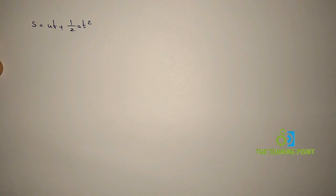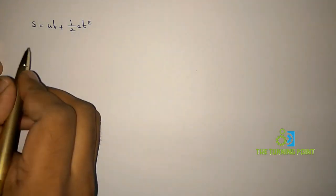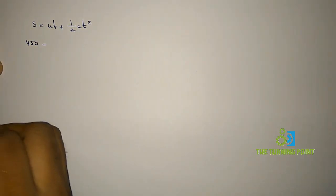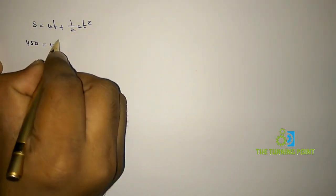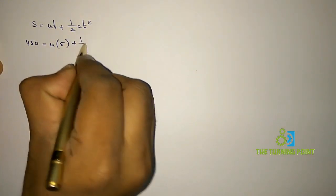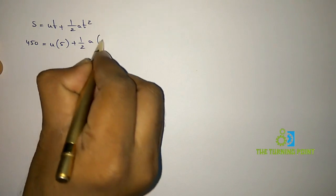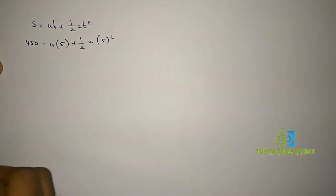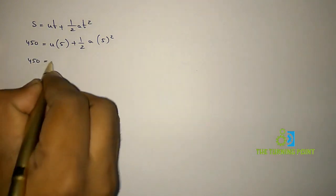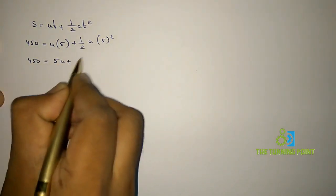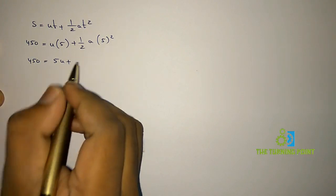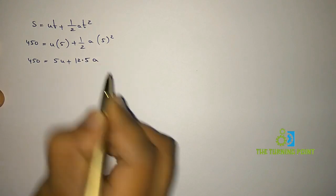For the first interval, the displacement is 450 meters, initial velocity is u, and the time interval is 5 seconds. So: 450 = u×5 + ½×a×5². This gives 450 = 5u + 12.5a.